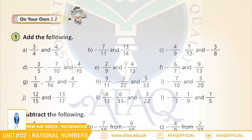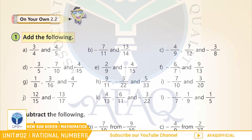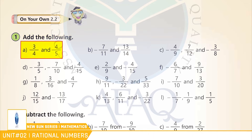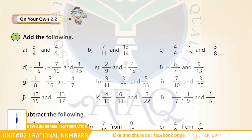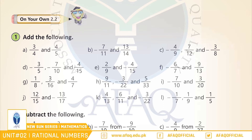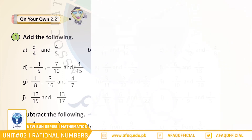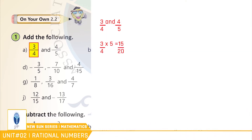بچو exercise سے کچھ سوال حل کرتے ہیں۔ Question 1: Add the following. (a) 3/4 and 4/5. بچو سب سے پہلے ہم نے دونوں fractions کے denominators کو same کرنا ہے۔ اس کے لیے ہم نے پہلے fraction کو دوسرے fraction کے denominator سے اور دوسرے fraction کو پہلے fraction کے denominator سے multiply کرنا ہے، جیسا کہ 3/4 multiplied by 5.